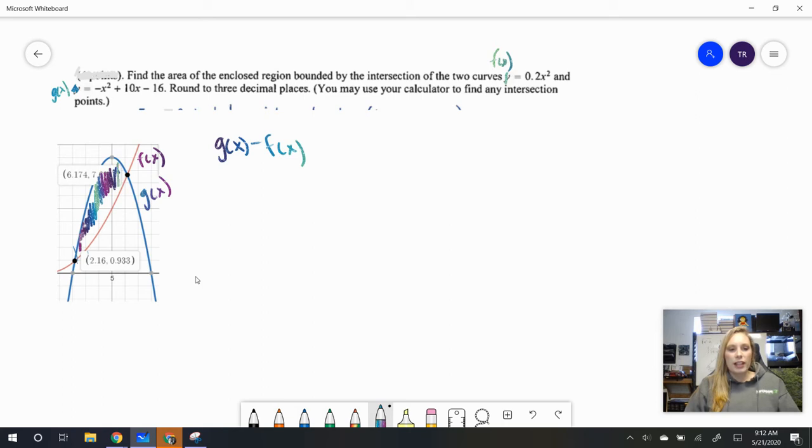That's going to give this height here. So that's going to give the height g of x minus f of x. To find the area, we would then need to multiply it by some width, and let's say that width is dx.